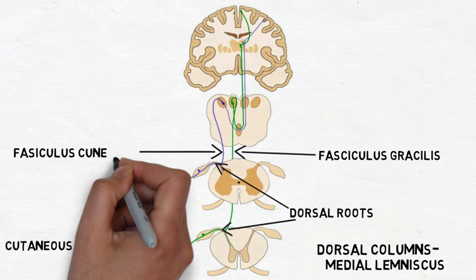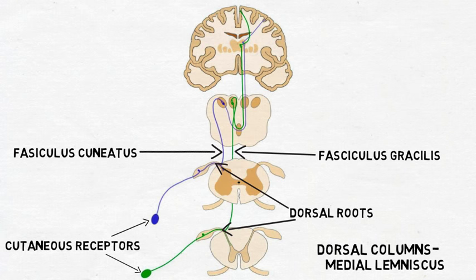In the medulla, the fasciculus gracilis and fasciculus cuneatus synapse on the next neurons in the pathway in areas called the nucleus gracilis and nucleus cuneatus, respectively.